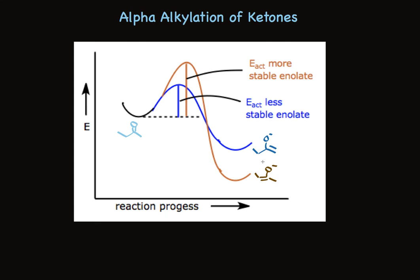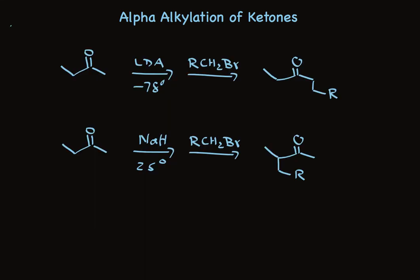Using room temperature, equilibration happens, and under those conditions we see a preference for formation of the more stable product — the one we call the thermodynamic product. So this is a classical example of kinetic control versus thermodynamic control: kinetic control occurring at low temperature, and thermodynamic control occurring at higher temperature. To summarize, we can alkylate at either alpha position. Regioselectivity is accomplished by using a bulky base and low temperature to alkylate at the less substituted alpha position, and by using a base at higher temperatures to accomplish alkylation at the more substituted alpha position. This is very useful in synthetic organic chemistry.